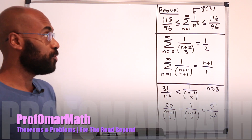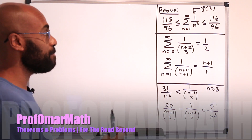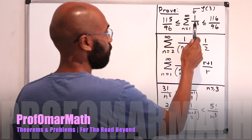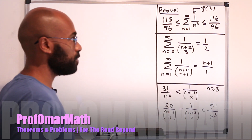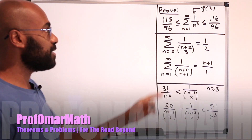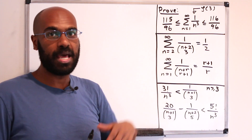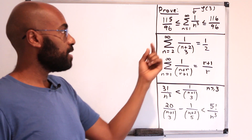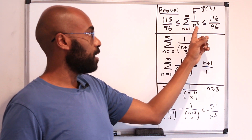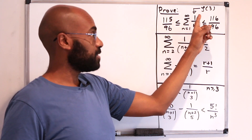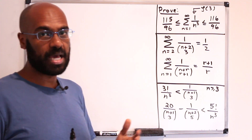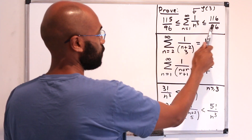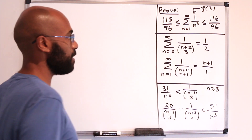This video is dedicated to proving a really tight bound on the sum n equals 1 to infinity of 1 over n cubed. This is the Riemann zeta function evaluated at 3, and in general, finding the value of the Riemann zeta function at odd integers is kind of a difficult task. So it's cool that we're able to find this really tight bound.